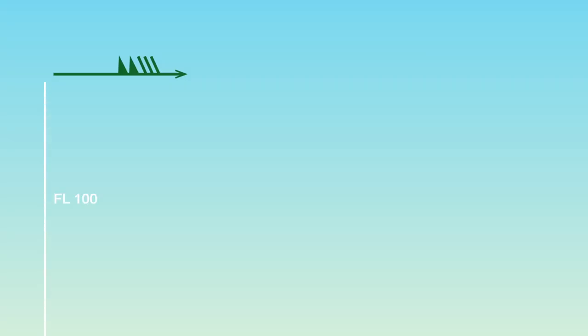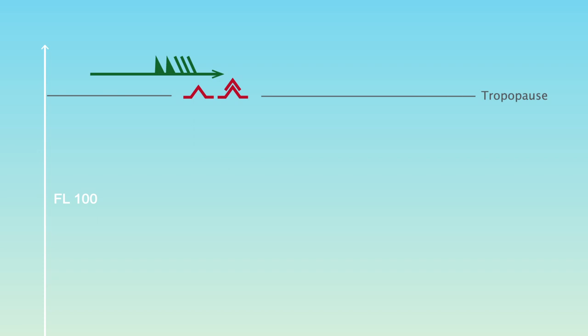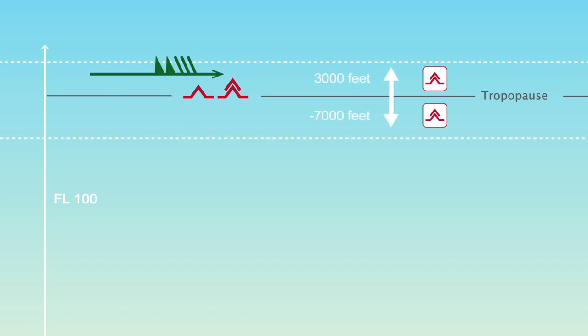You may be able to ask ATC for another flight level or routing. Beware that clear air turbulence can be encountered anywhere from 7,000 feet below to above 3,000 feet above the tropopause. However, a descent or climb of 2,000 feet is often enough to exit the turbulence.